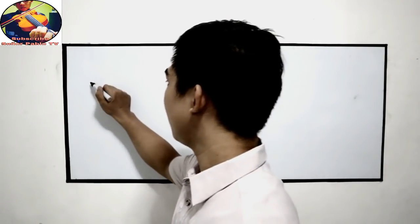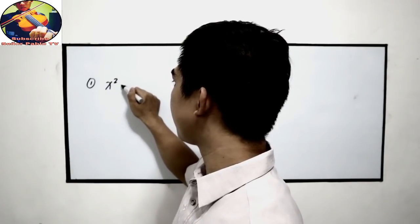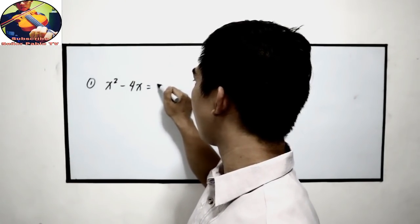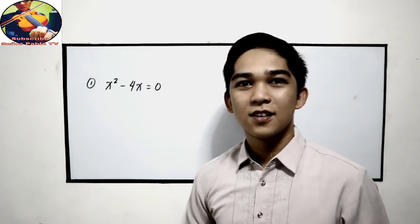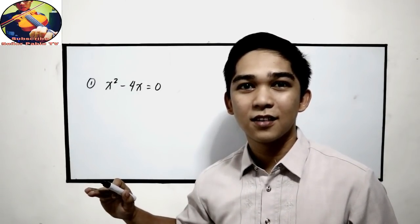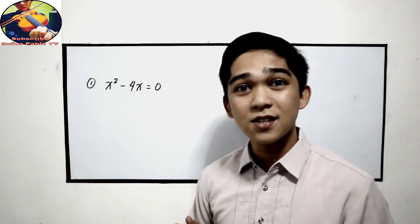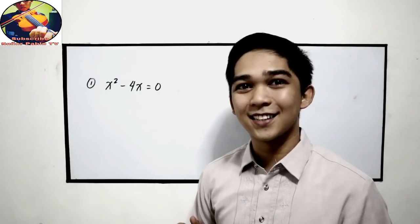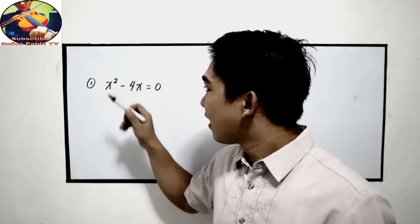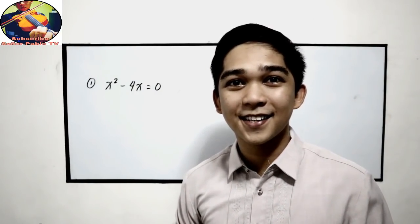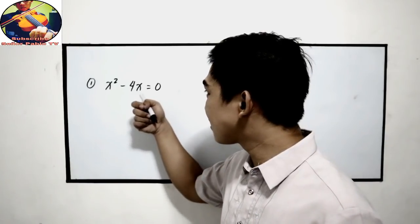Let us start with the greatest common factor. Greatest common factor means we need to determine first the common factor. Let's try number 1: x squared minus 4x is equal to 0. First, determine the common factor of the coefficient, then the variable. Our common factor for the variable is x because x is our lowest exponent.